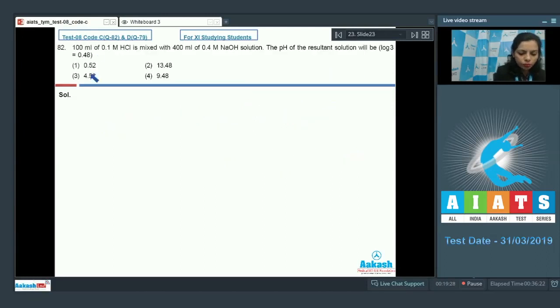Let's take question number 82. 100 ml of 0.1 molar HCl is mixed with 400 ml of 0.4 molar NaOH solution. The pH of the resultant solution will be. The value of log 3 is given for your convenience. So here we have the acid. Let's compare the milliequivalents of HCl.